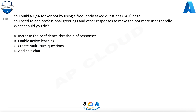Question 118. You build a Q&A Maker bot by using a frequently asked questions (FAQ) page. You need to add professional greetings and other responses to make the bot more user-friendly. What should you do? A. Increase the confidence threshold of responses. B. Enable active learning. C. Create multi-turn questions. D. Add chit-chat.